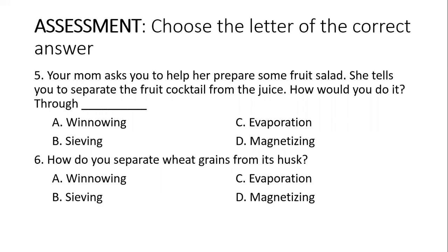Number 5: Your mom asks you to help her prepare some fruit salad. She tells you to separate the fruit cocktail from the juice. How would you do it? A. Winnowing. B. Sieving. C. Evaporation. Or D. Magnetizing. Number 6: How do you separate wheat grains from its husk? A. Winnowing. B. Sieving. C. Evaporation. Or D. Magnetizing.